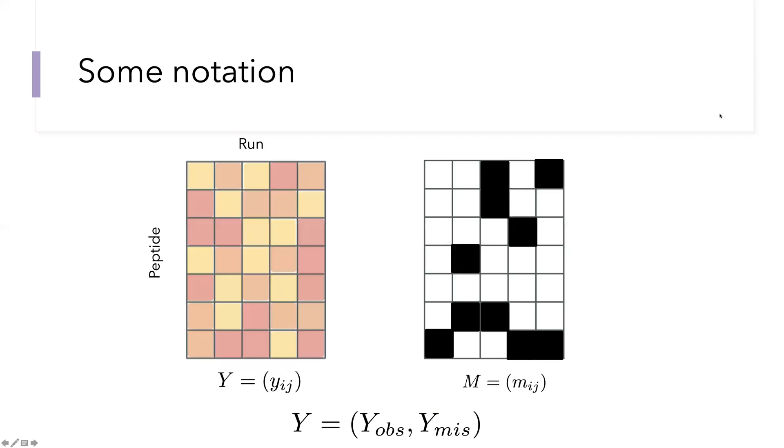I wanted to introduce a little bit of notation. Imagine that we're analyzing peptide intensities, and we can conceptualize a complete matrix of every peptide in the sample and several runs as columns in a matrix. We'll use Y to denote the peptide intensities. So in row I and column J, we have the peptide intensity for peptide I in run J.